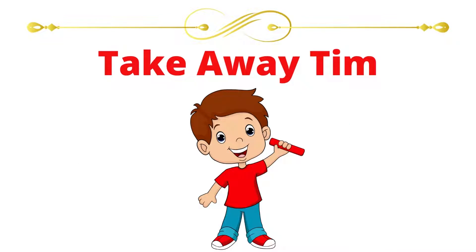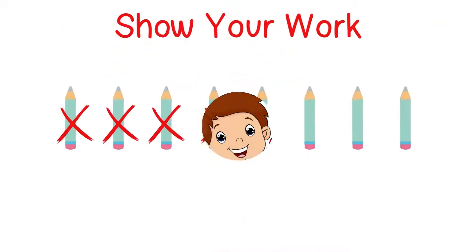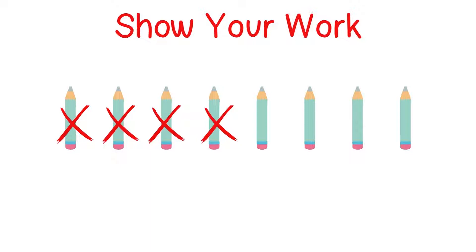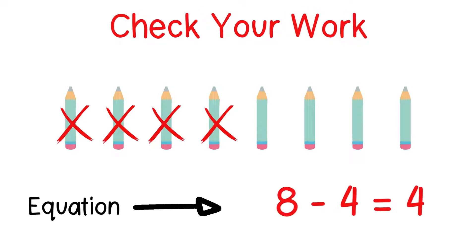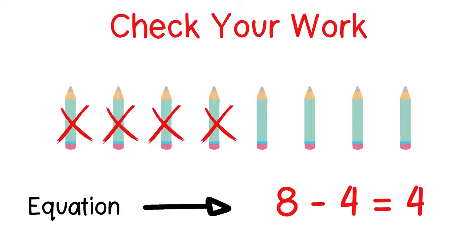If you said Takeaway Tim, then you are correct. We need to subtract to show what happened after Kasia gave away four of her pencils. Here's my picture that shows the eight pencils Kasia started with and what happened when she gave four pencils away. If we start with eight and take away four, we are left with four. Eight minus four equals four.